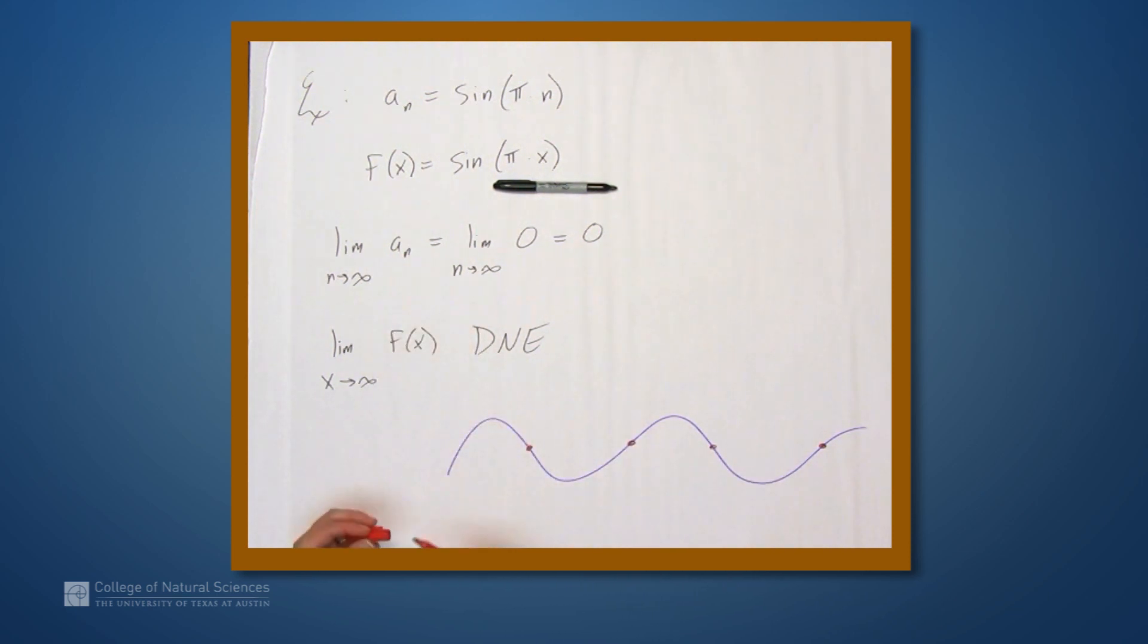So in this case, we have a sequence that converges as n goes to infinity, and an associated function that doesn't.